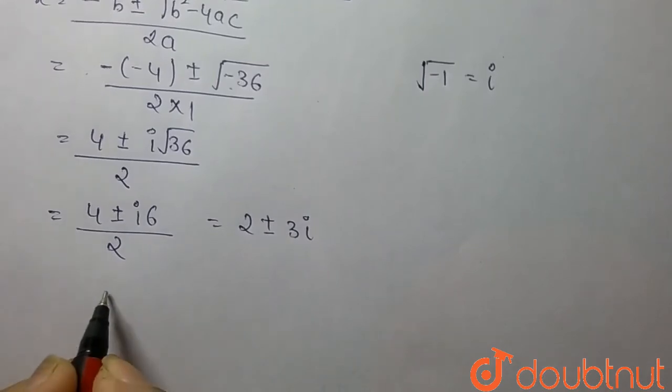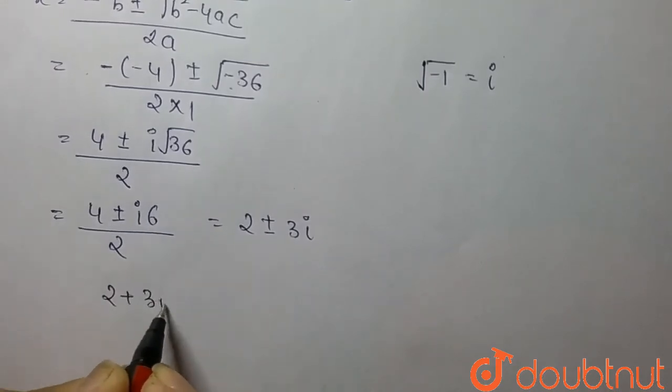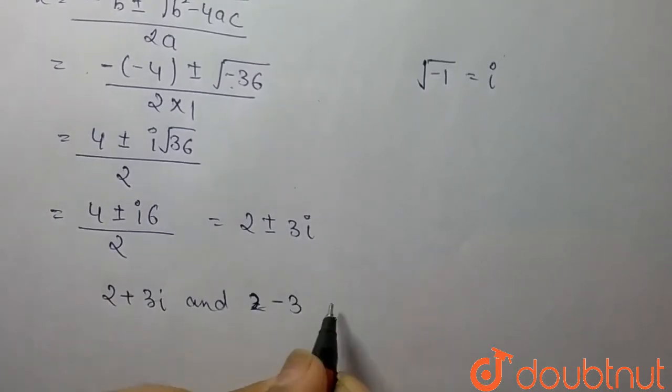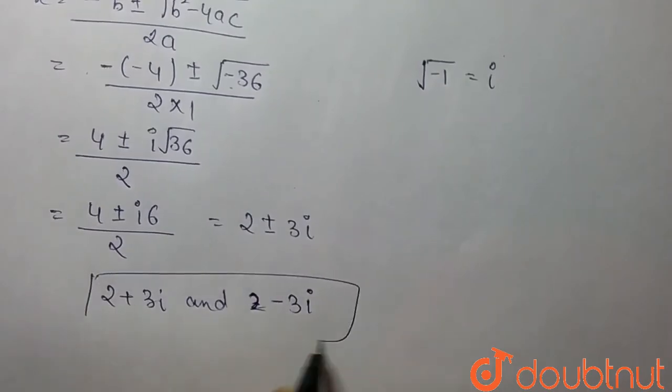So the root of the given equation is 2 plus 3i and 2 minus 3i. So this is our final answer.